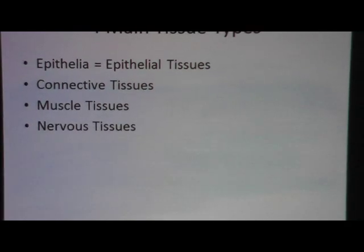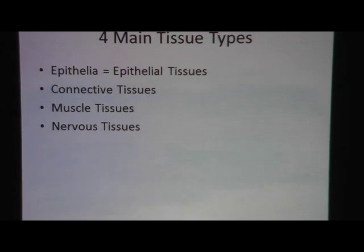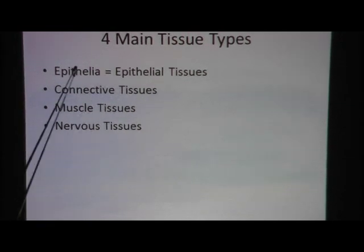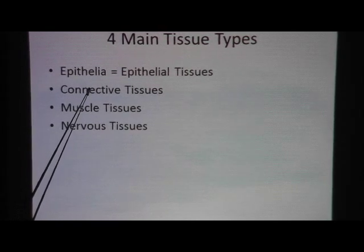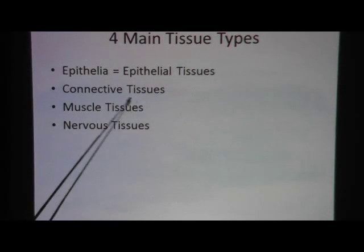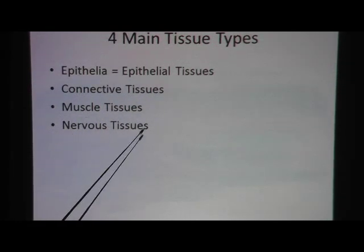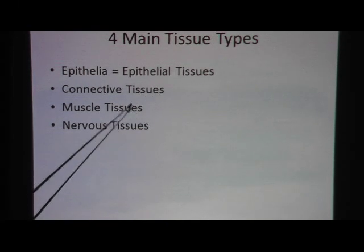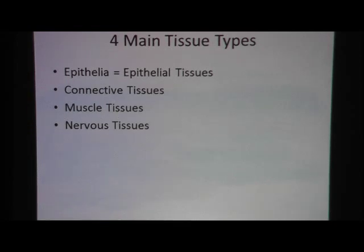Let's review. There are four main tissue types in the body: epithelial tissues, otherwise known as epithelia (plural) or epithelium (singular), connective tissues, muscle tissues, and nervous tissue. The entire body can be broken down into and fit into one of these tissues.